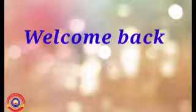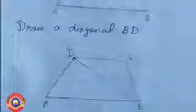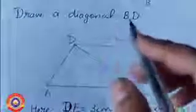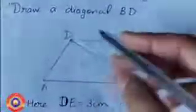In the last chapter on construction of quadrilaterals, we discussed the specialities of trapezium. Let us draw a non-isosceles trapezium ABCD. Draw a diagonal BD. Now there are two triangles in the trapezium: triangle ABD and triangle BCD. Draw a perpendicular DE to AB, where DE equals 3 cm and AB equals 7 cm.